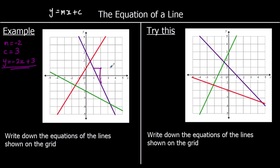For the red line, for every one it goes across, it goes up more than one. We can see it goes across two, up three. So for every two it goes across, it goes up three. We can work it out by doing the change in y divided by the change in x. So three over two — that's one and a half as a decimal, but three over two is good.